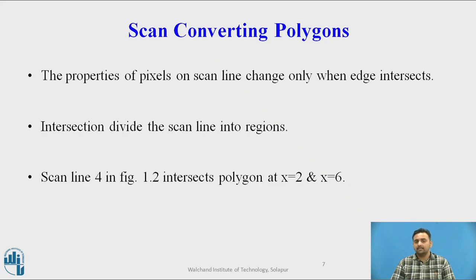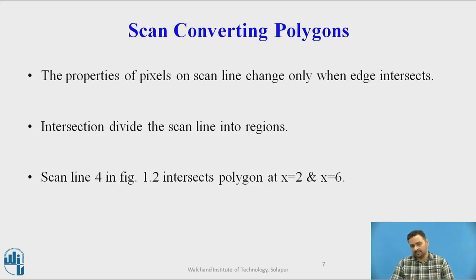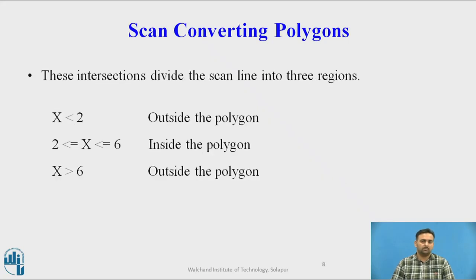The intersections divide the scanline into regions. On scanline 4, there are three regions: from 0 to 2 (before any intersection), from 2 to 6 (between first and second intersection), and after 6 (after second intersection). Scanline 4 intersects the polygon at x equal to 2 and x equal to 6. The region where x is less than 2 is outside the polygon. The region where x is between 2 and 6 is inside the polygon, and we mark those pixels with the polygon color. The region where x is greater than 6 is outside the polygon.